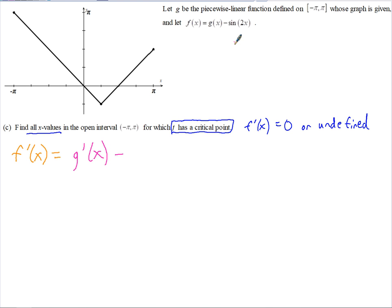So remember, where f has a critical point is where f'(x) is either zero or undefined. Alright, so let's take a look at this one. Here we've got to take the derivative of f(x). So f'(x) would equal the derivative of g(x) is g'(x). And the derivative of sine is cosine, but we've got the chain rule there.